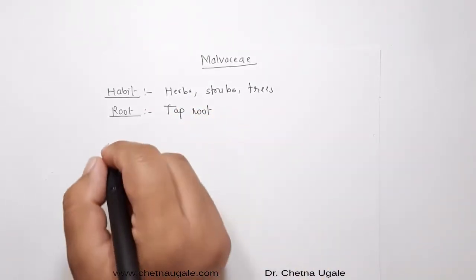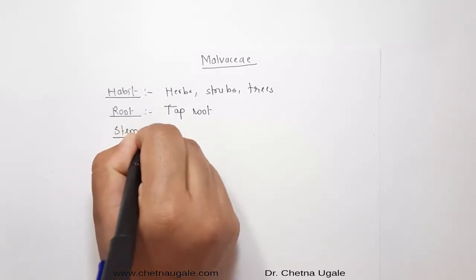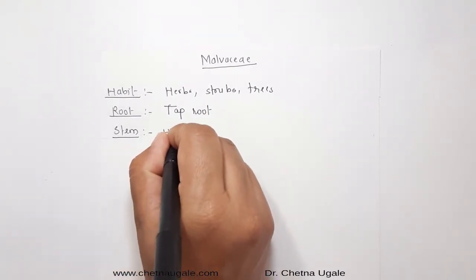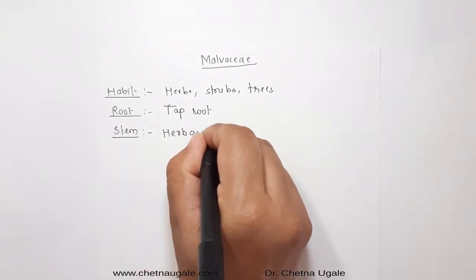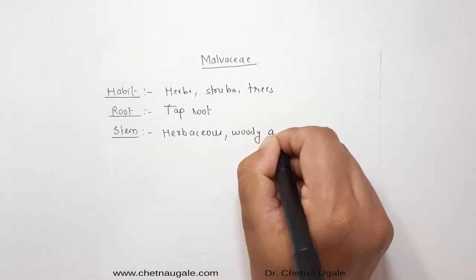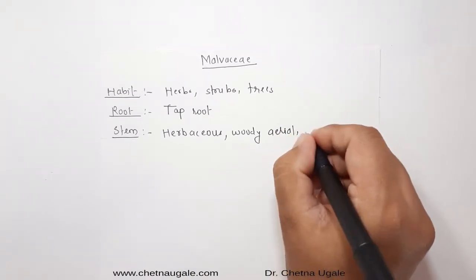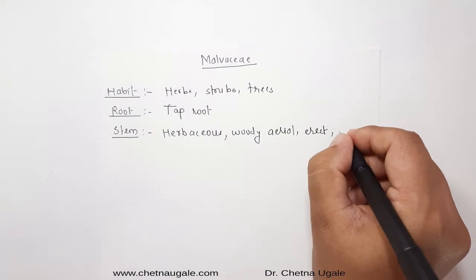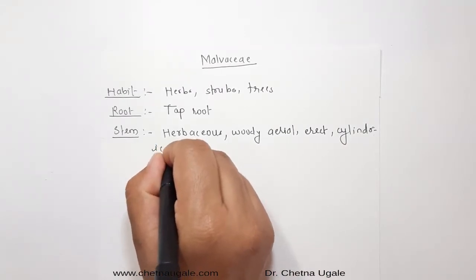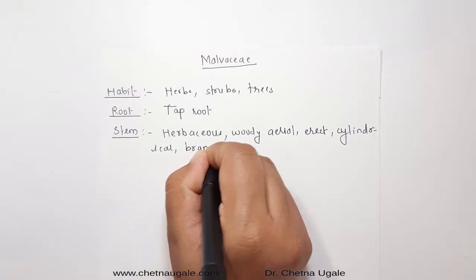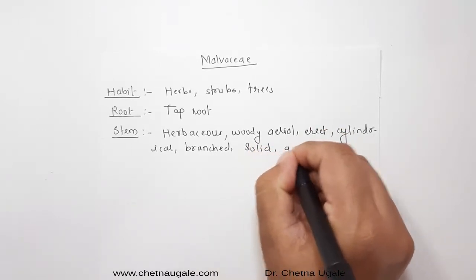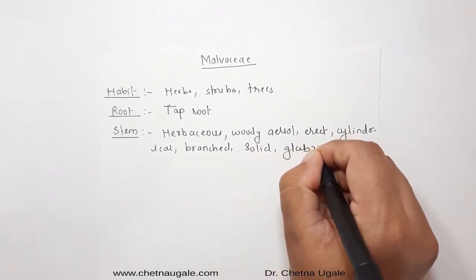Next one is the stem. The stem is herbaceous and can range up to woody, as in the case of trees. It is aerial and grows erect. The shape of the stem is cylindrical and it is profusely branched. The surface of the stem is solid and glabrous in nature.